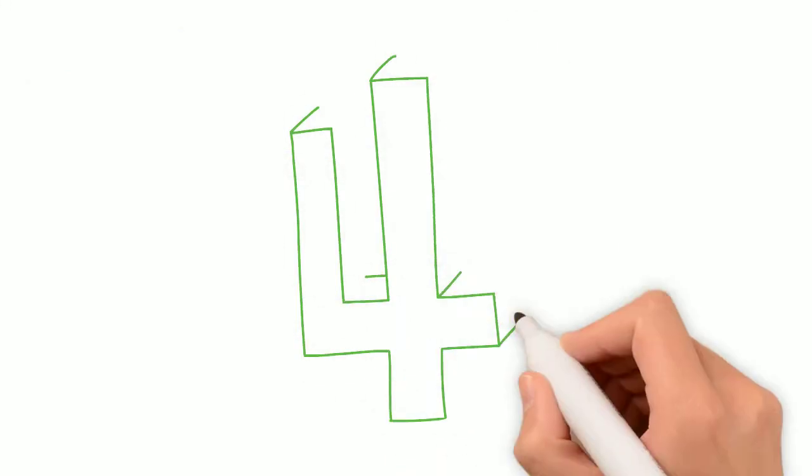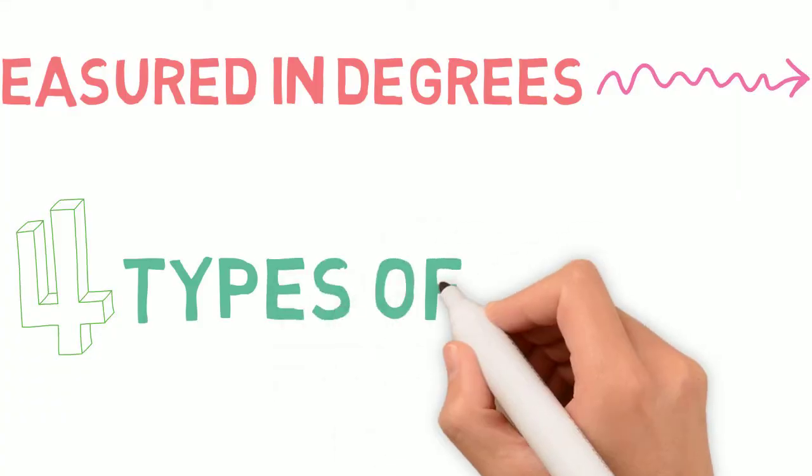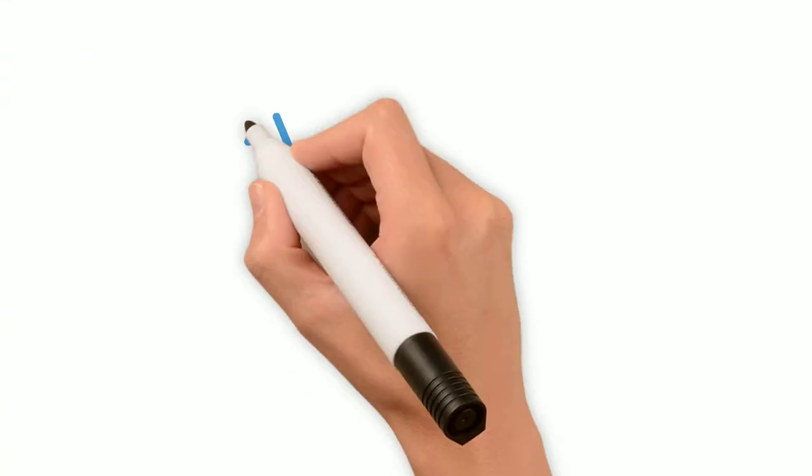There are four types of angles you should know, especially for the rest of this video. We have an acute angle, a right angle, an obtuse angle, and a straight angle.